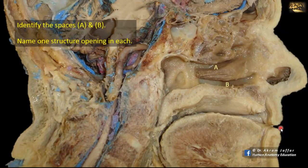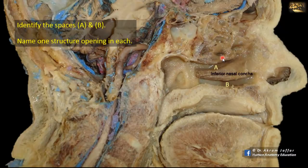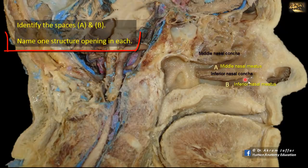Identify the spaces A and B. Name one structure opening in each. This is a mid-sagittal section of the head showing the lateral part of the nasal cavity. You can see the inferior nasal concha and the middle nasal concha. Below each one of them is a meatus, so B is the inferior meatus and A is the middle meatus.